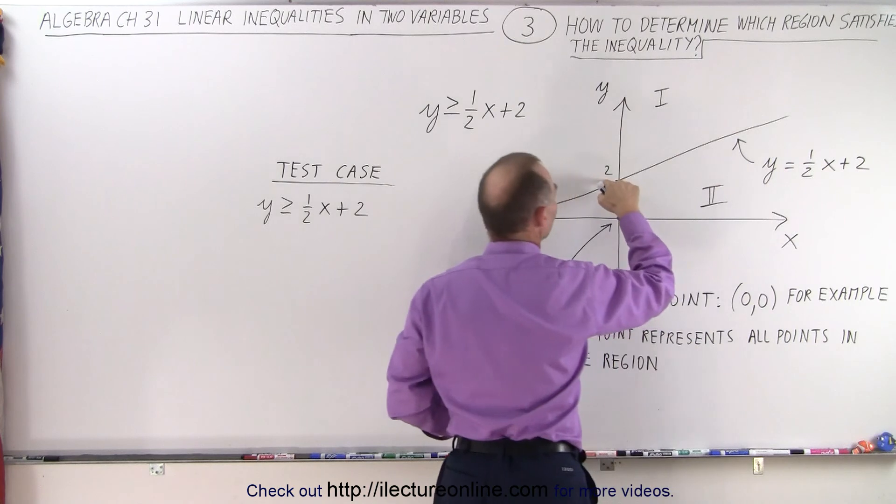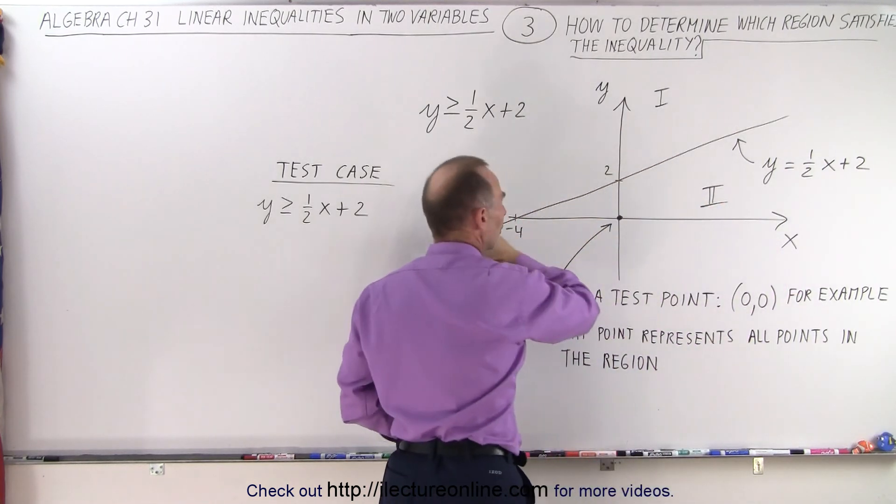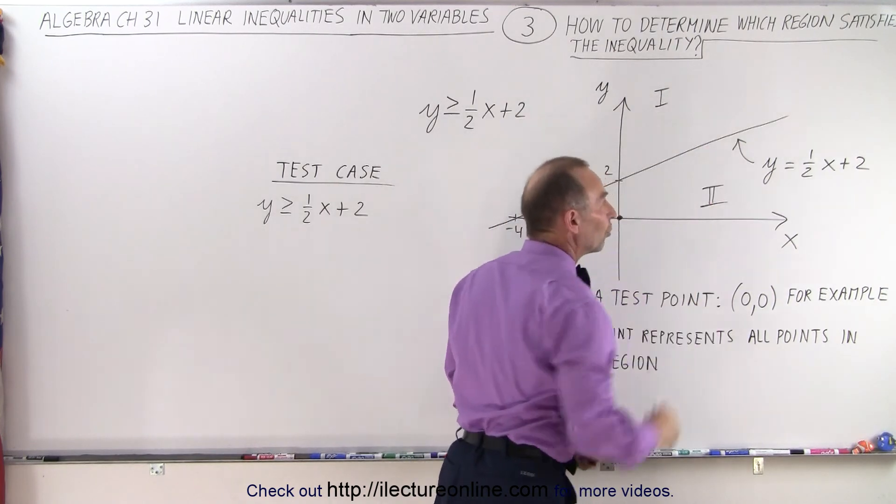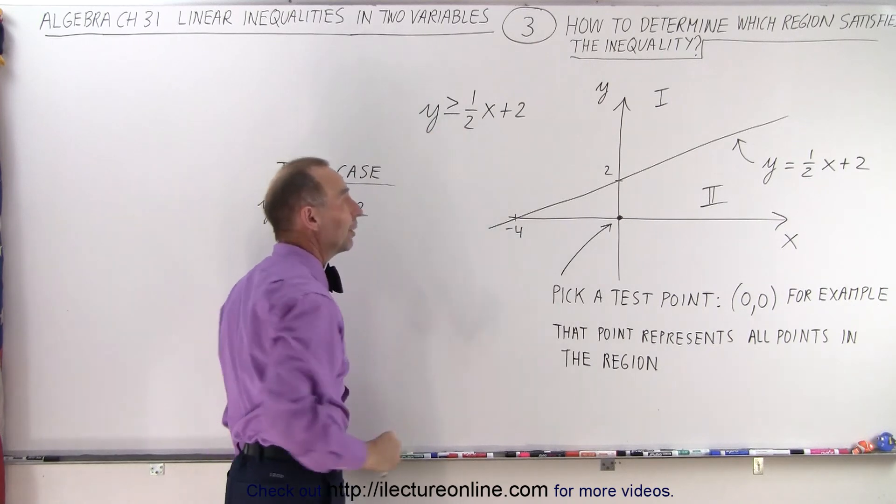When x equals 0, y equals 2. And when y equals 0, x equals 4. We can see that line represents y equals 1/2 x plus 2, which is the dividing line for our inequality.